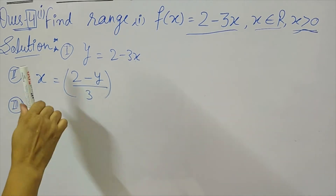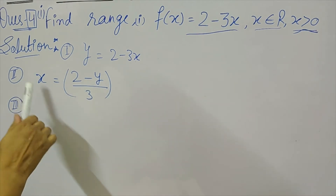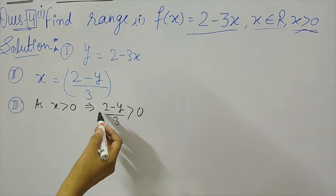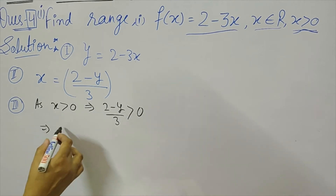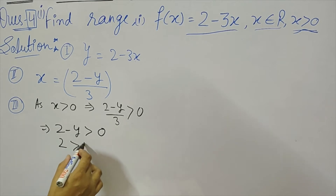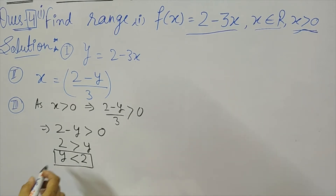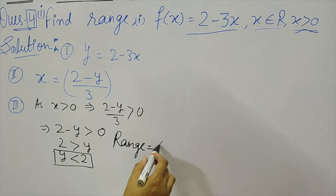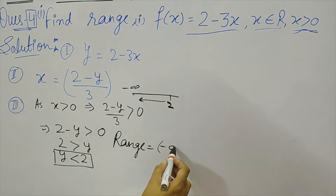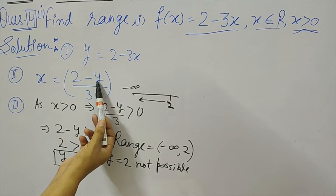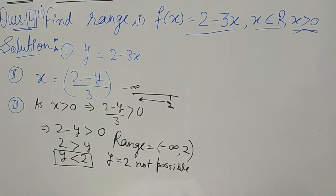Now we think about all possible values of y such that x satisfies the given condition. Since x must be a real number and x > 0, we need (2 − y)/3 > 0, which gives 2 > y, i.e., y < 2. So the range is (−∞, 2). We cannot take y = 2 because that would make x = 0, and x must be strictly greater than 0.